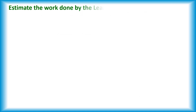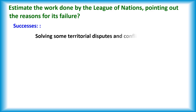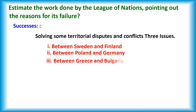The next question is: Estimate the work done by the League of Nations, pointing out the reasons for its failure. The answer is as follows. Successes: Solving some territorial disputes and conflicts — 3 issues. 1. Between Sweden and Finland. 2. Between Poland and Germany. 3. Between Greece and Bulgaria.